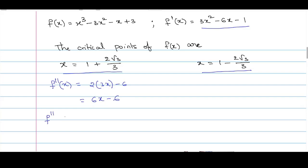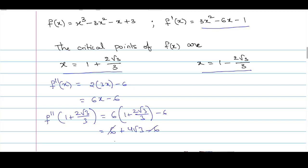Let us substitute the first critical point: f''(1 + (2√3)/3) = 6·(1 + (2√3)/3) - 6 = 6 + 4√3 - 6. The 6 and -6 cancel, giving us 4√3, which is greater than 0. Hence we conclude this point is a local minimum.